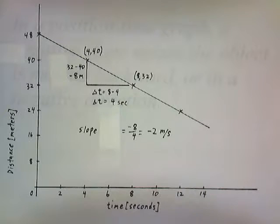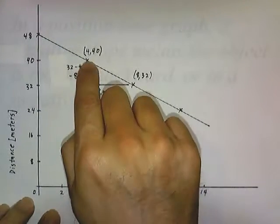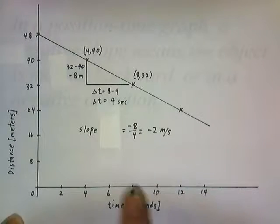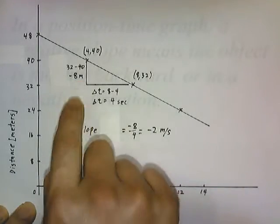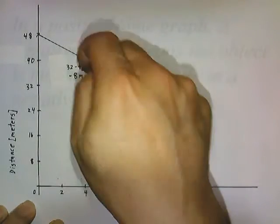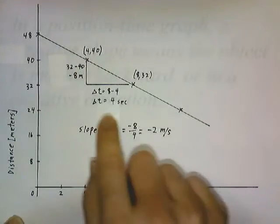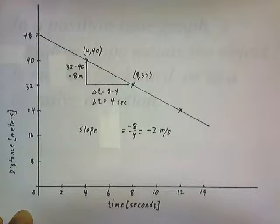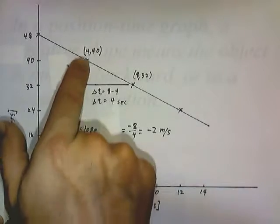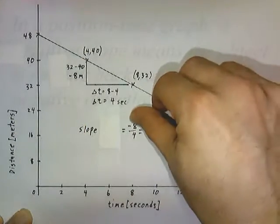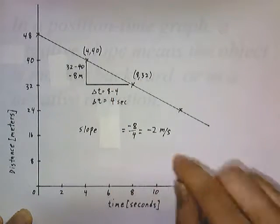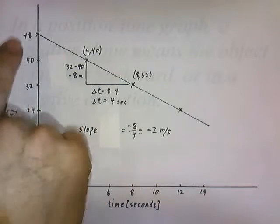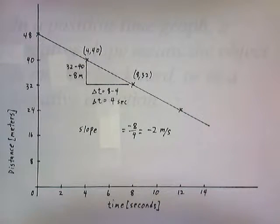If we pick points (4, 40) and (8, 32), we compute the slope as 32 minus 40, which gives us negative 8, because we've gone down 8 units. The horizontal change is 8 minus 4, which is 4. So negative 8 divided by 4 gives us a slope of negative 2. Notice that the slope is negative and the line slants downward from left to right, meaning our object is moving at a constant speed in a negative direction — right to left, or to the west.